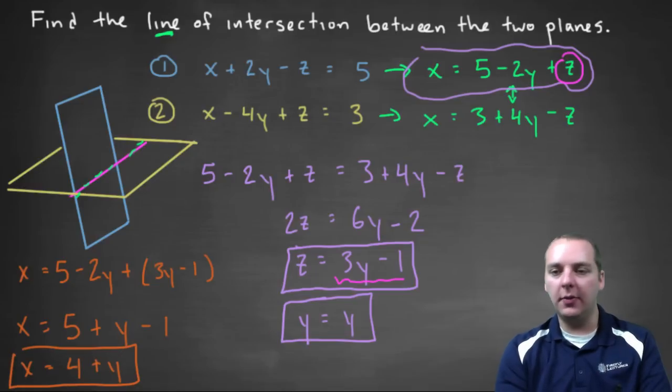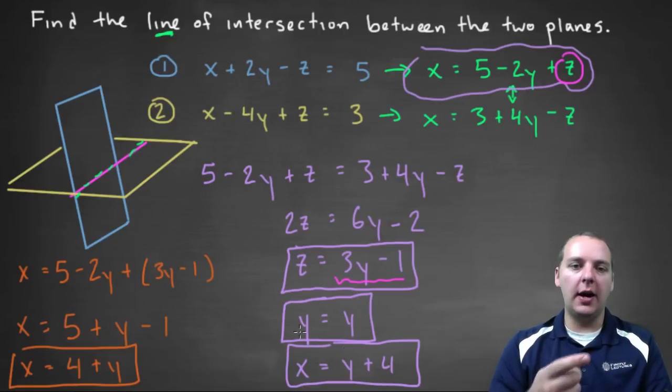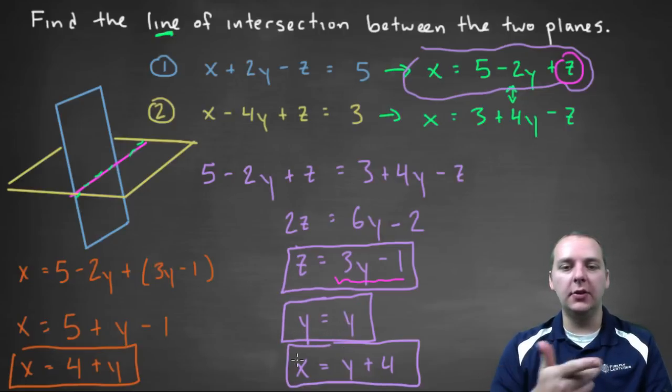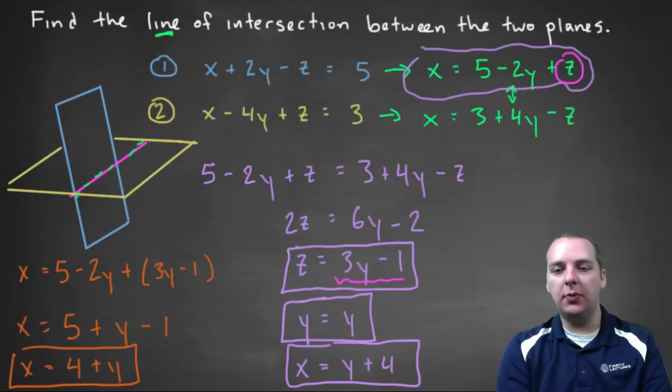So look at these three boxes right here, I'll even write it in purple up under here. X equals y plus four. So z is a function of y, y is obviously a function of y, and x is a function of y. So all we need to do, is change these y's on the right hand side, to a parameter t, and we're done.